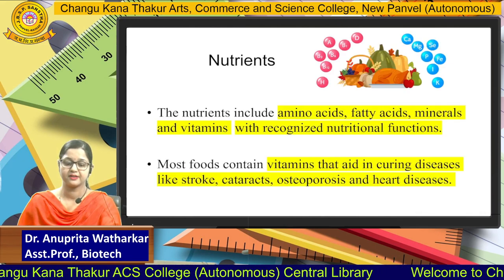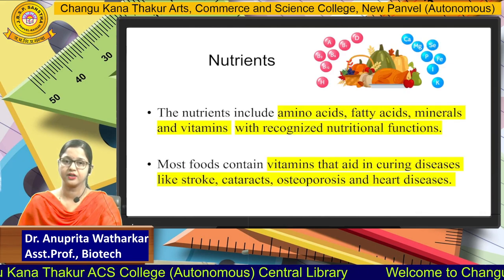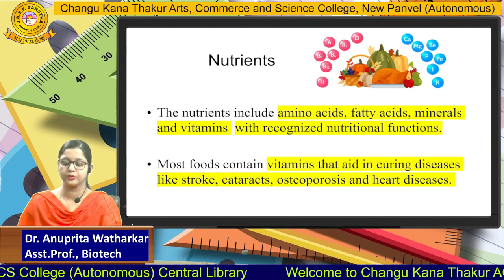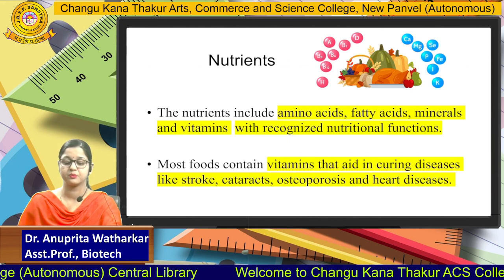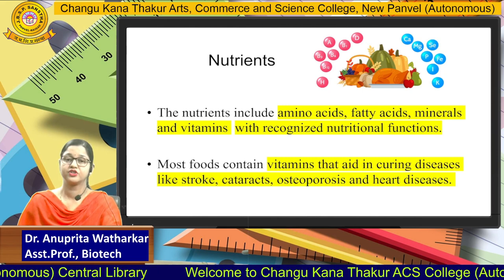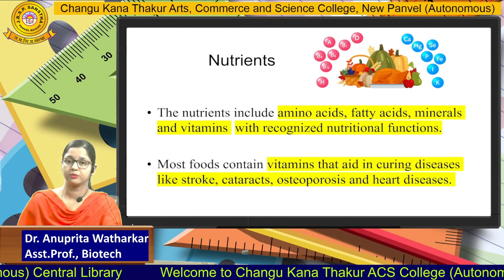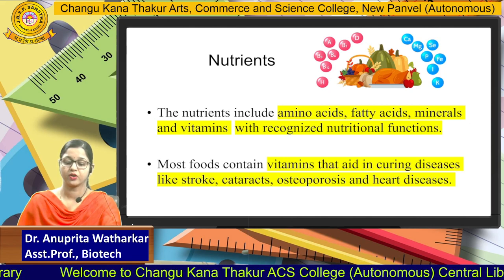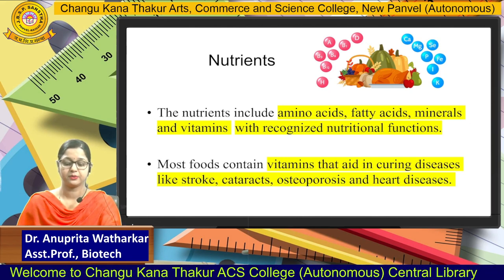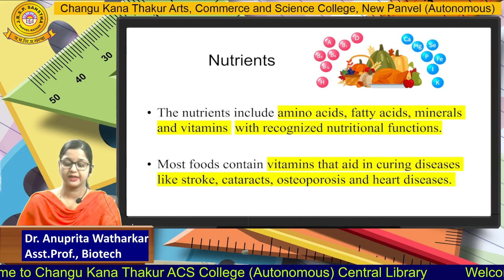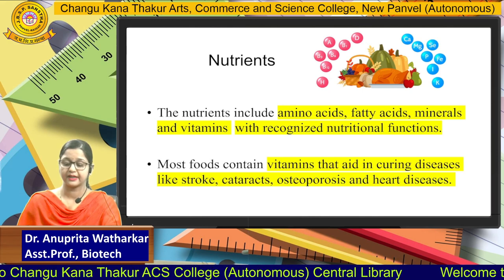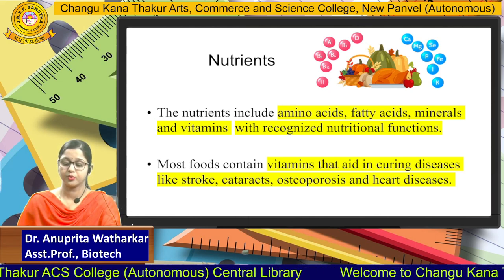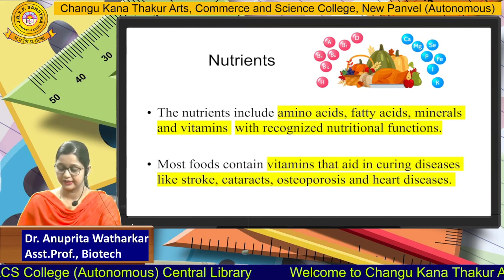Nutrients as traditional nutraceuticals include amino acids, fatty acids, minerals, and vitamins, which are regularly available in our diet and benefit our health and well-being. Most foods contain vitamins that aid in curing diseases like stroke, cataract, osteoporosis, and even heart diseases.